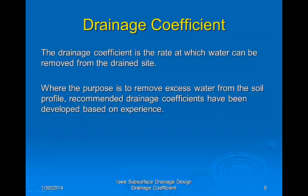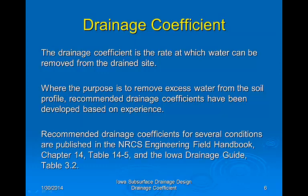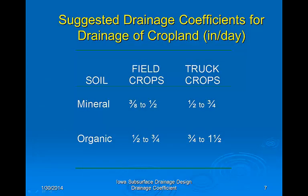Where the purpose is to remove excess water from the soil profile, recommended drainage coefficients have been developed based on experience. These are published in the NRCS Engineering Field Handbook Chapter 14, Table 14-5, and also in the Iowa Drainage Guide Table 3.2. As the crop becomes more valuable or less tolerant of excess moisture, the recommended drainage coefficient increases. For organic soils, which hold more excess water than mineral soils, the recommended drainage coefficient is also larger.